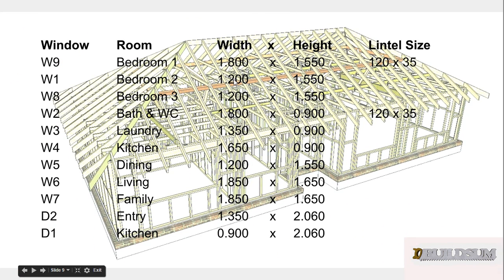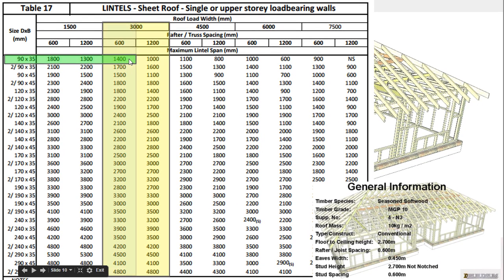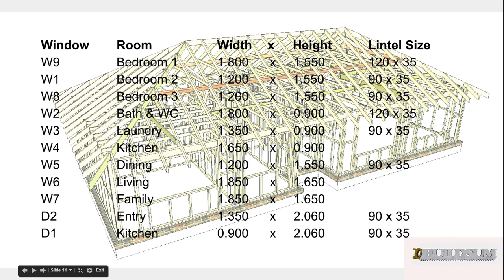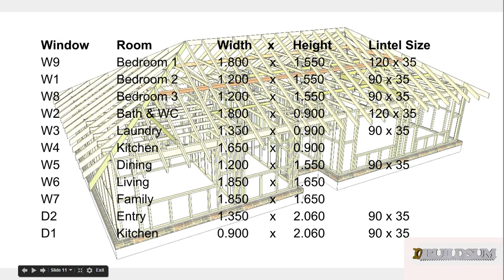The next opening down is 1200mm. A 90×35 will handle spans up to 1400mm, so we can use 90×35 for the 1200mm opening. Our 1350mm openings also fall within that 1400mm limit, so 90×35 works there as well — we'll apply it to all 1350mm openings.